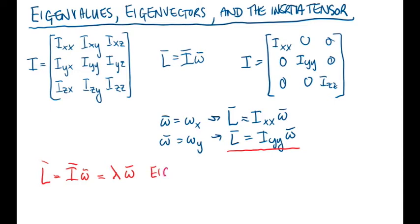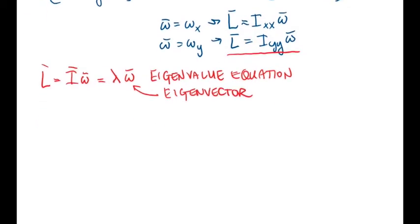This is what's known as an eigenvalue equation, where lambda is the eigenvalue, and the angular velocity in its new form is the eigenvector. How do we solve this to find the principal axes of a rotating body?